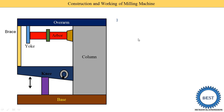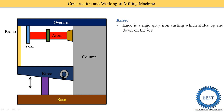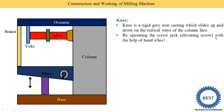The knee is a rigid grey iron casting that slides up and down on the vertical dovetail guideway of the column face. The knee moves up and down with the help of the screw jack. By operating the screw jack or elevating screw with a hand wheel or power feed, the knee moves either by hand or by power.